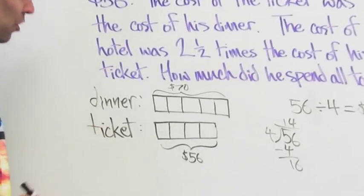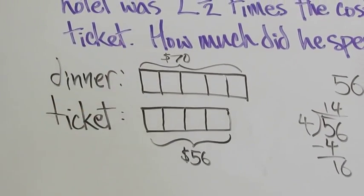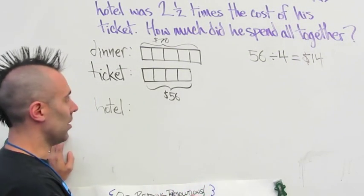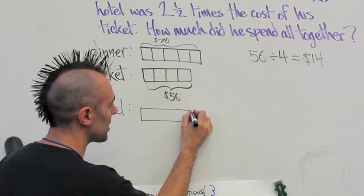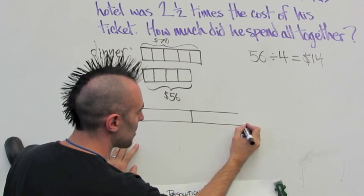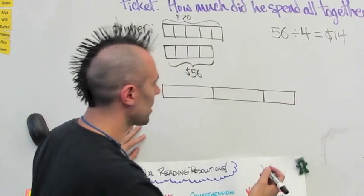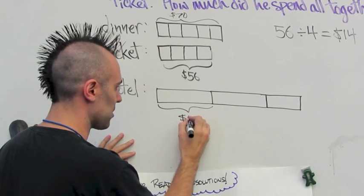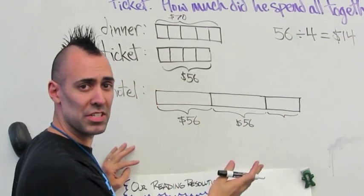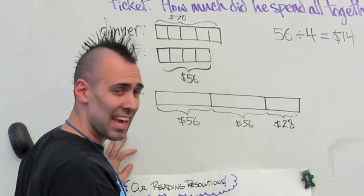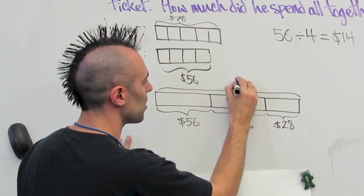Now I know the dinner is $70 and the ticket is $56. For the hotel, which was two-and-a-half times the cost of his ticket, the tape diagram shows one length of $56, another $56, and then half of $56, which is $28. Adding these together: 56 plus 56 plus 28 gives a total of $140.